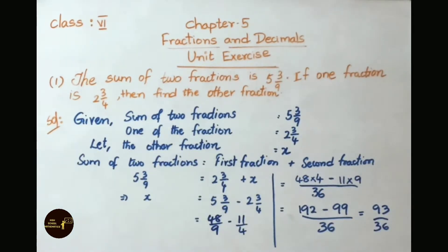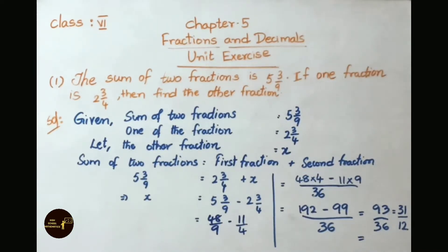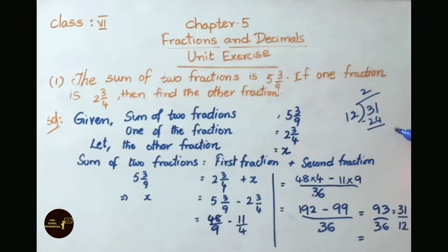Dividing by 3: 93 divided by 3 is 31, and 36 divided by 3 is 12. Now simplifying 31 by 12 further by division: 12 goes into 31 twice giving 24, remainder 7. So the answer is 2 and 7 by 12.